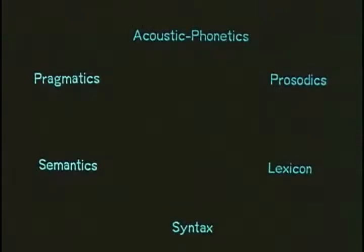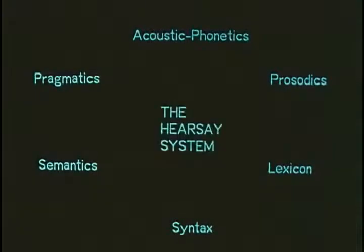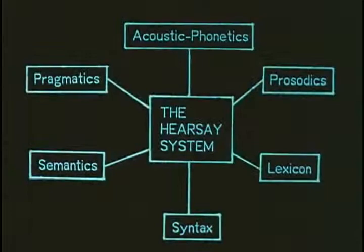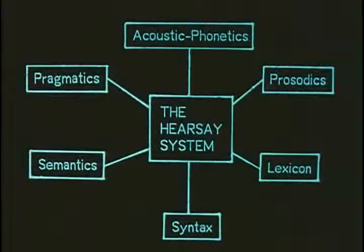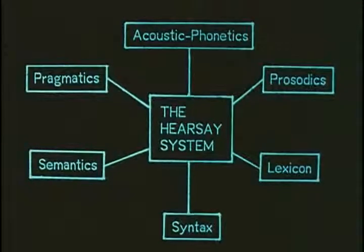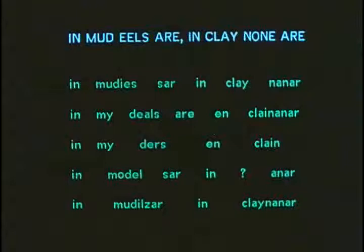To equal human performance, a machine must use all these sources of knowledge effectively. In the Hearsay system, this is achieved by representing knowledge as a set of cooperating parallel processes. Let's now observe the system at work.